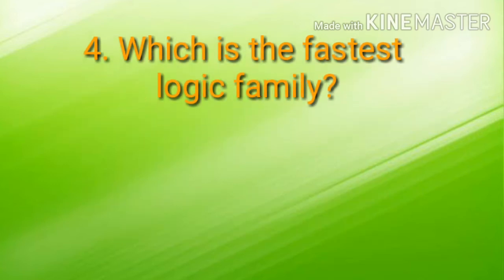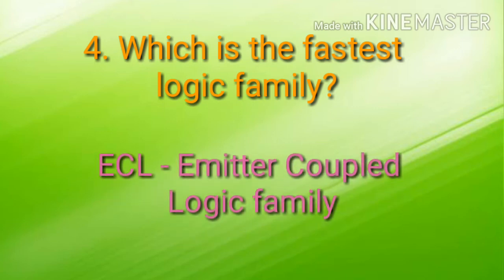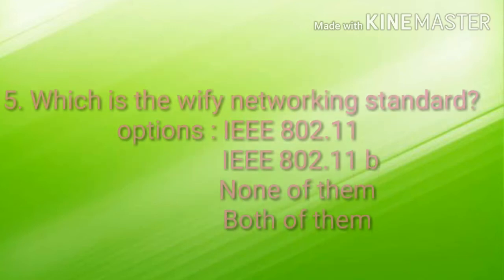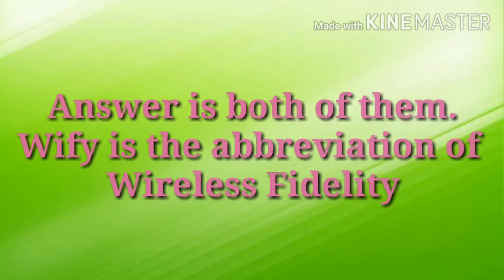The next question is: which is the fastest logic family? The answer is Emitter Coupled Logic (ECL). The next question is: which one is the Wi-Fi networking standard? The options were IEEE 802.11, IEEE 802.11b, none of them, or both of them. The answer is both of them — IEEE 802.11 and IEEE 802.11b are both Wi-Fi networking standards. Wi-Fi is the abbreviation of Wireless Fidelity.